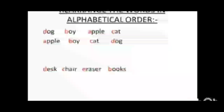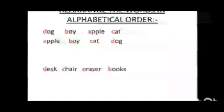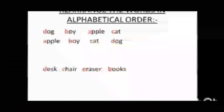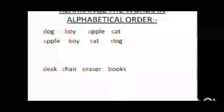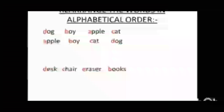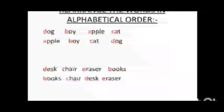Similarly, the other set of words are desk, chair, eraser, books. To arrange this list in alphabetical order, we again look at the first letter of each word. The word which begins with letter B comes first, followed by C, then D, then E. This list in alphabetical order will be: books, chair, desk, eraser.